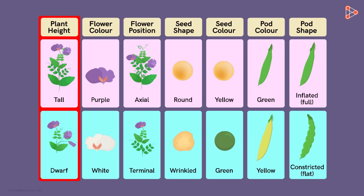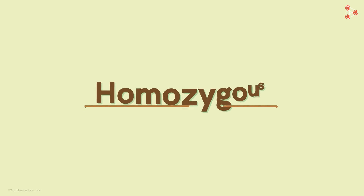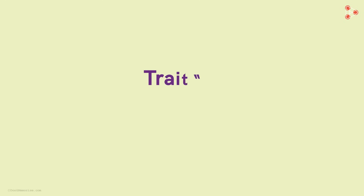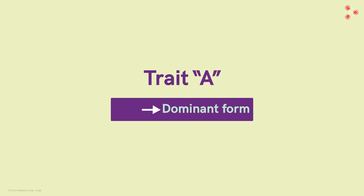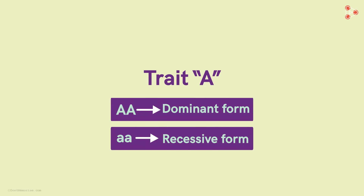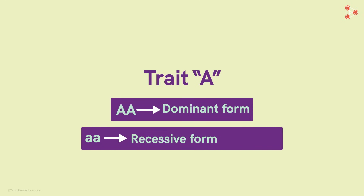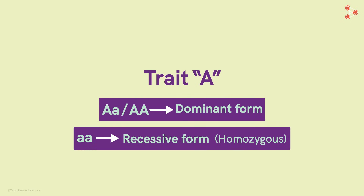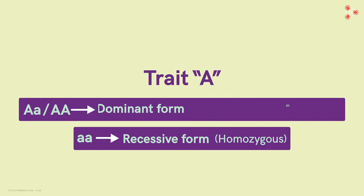Before beginning any such experiment, we need to make sure that the parents selected are homozygous in nature. Let's say we wish to cross two organisms with some trait named A. The dominant form should ideally be AA both in uppercase, while the recessive form has to be aa both in lower case. The recessive form will definitely be homozygous, since the recessive character is expressed only when in homozygous form. But the dominant character can have both sets of alleles — AA in uppercase as well as Aa — so it could be homozygous or heterozygous.